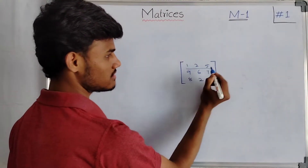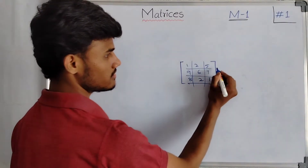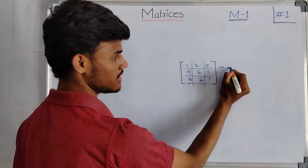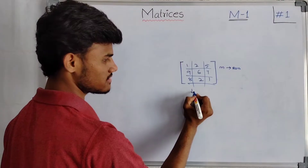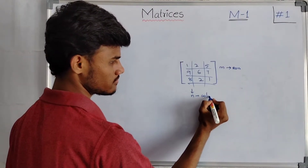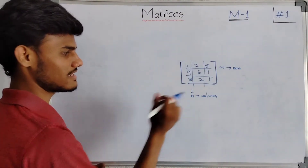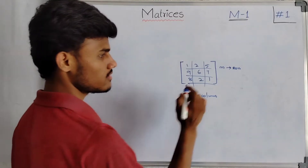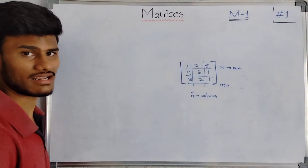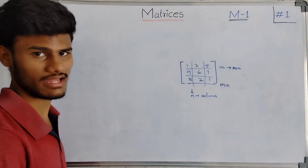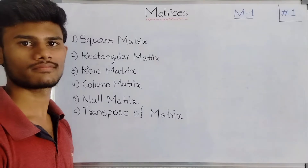In a matrix, these are rows and these are columns. Rows are represented by M and columns are represented by N. The matrix consists of M number of rows and N number of columns, so the matrix is called an M by N matrix. Now let us see the types of matrices.